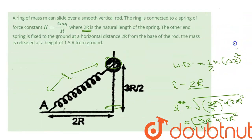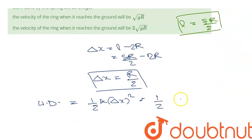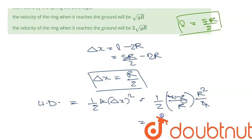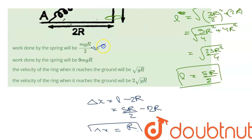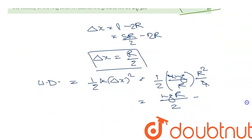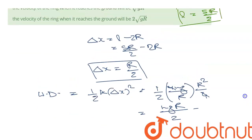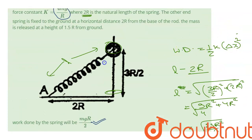k is given as 4mg/r. So work done = ½ × (4mg/r) × (r/2)² = ½ × (4mg/r) × (r²/4) = mgr/2. So option A is correct. The spring only does the work required to un-stretch itself, because at the bottom it is un-stretched and at the top it is stretched.